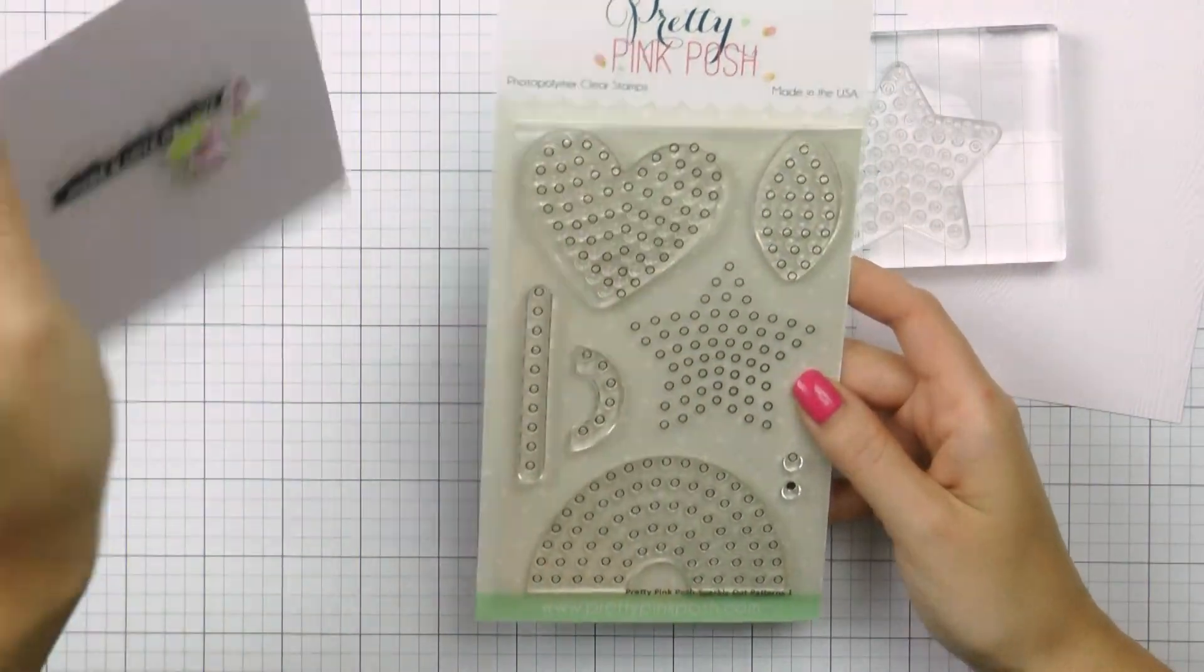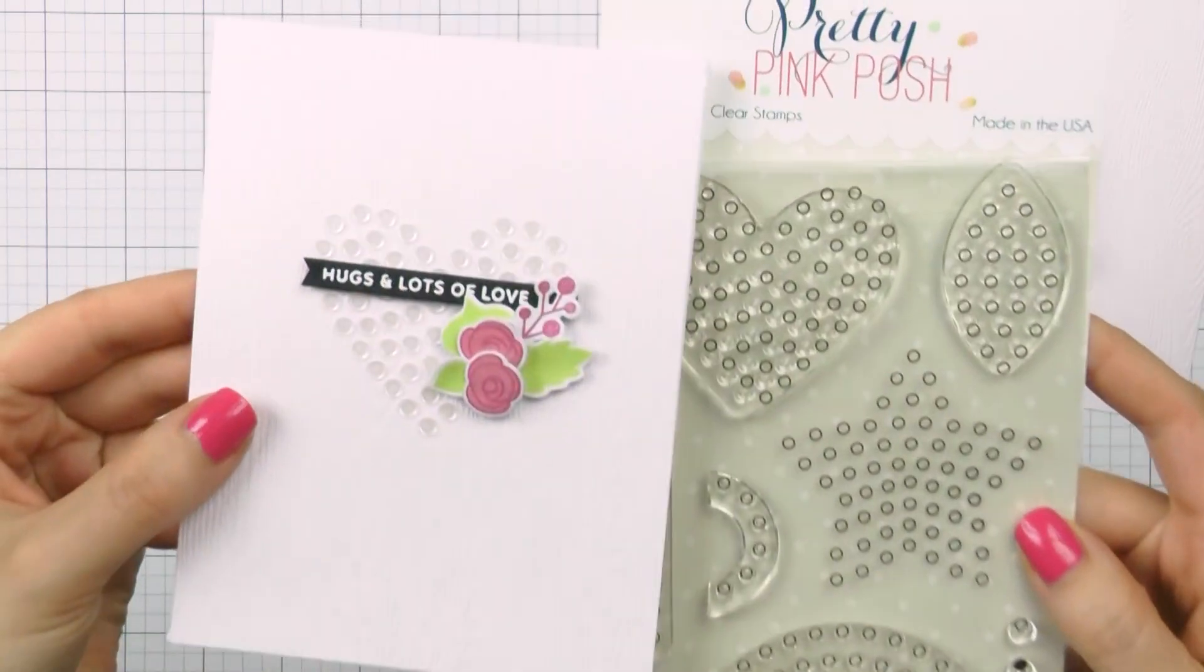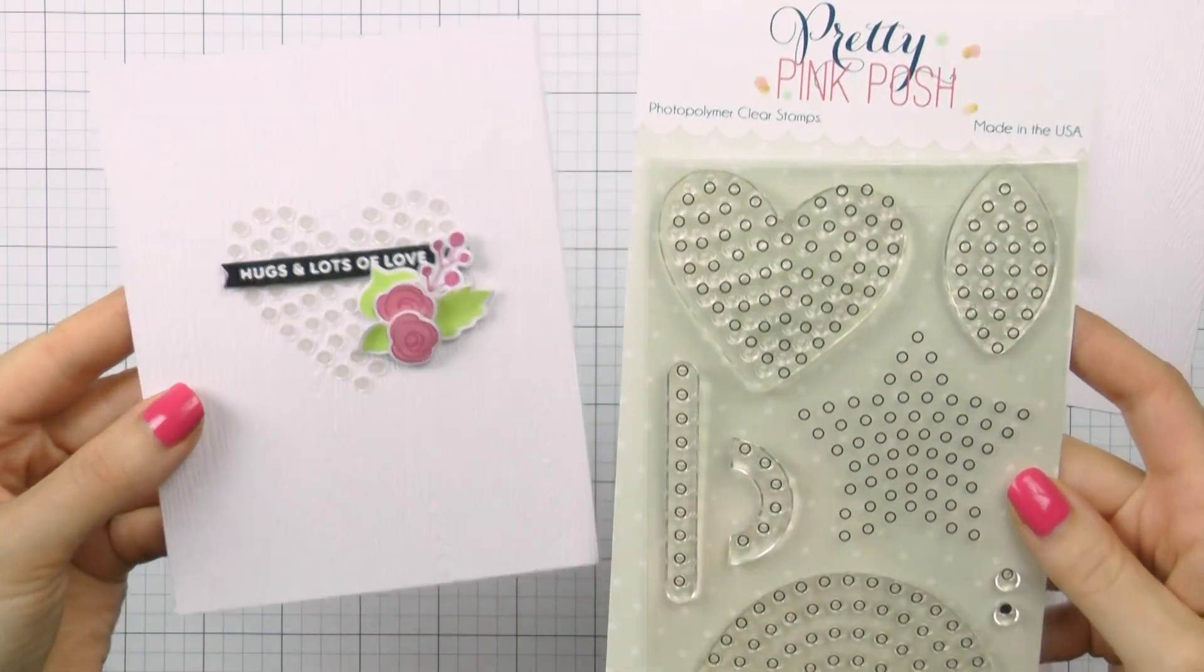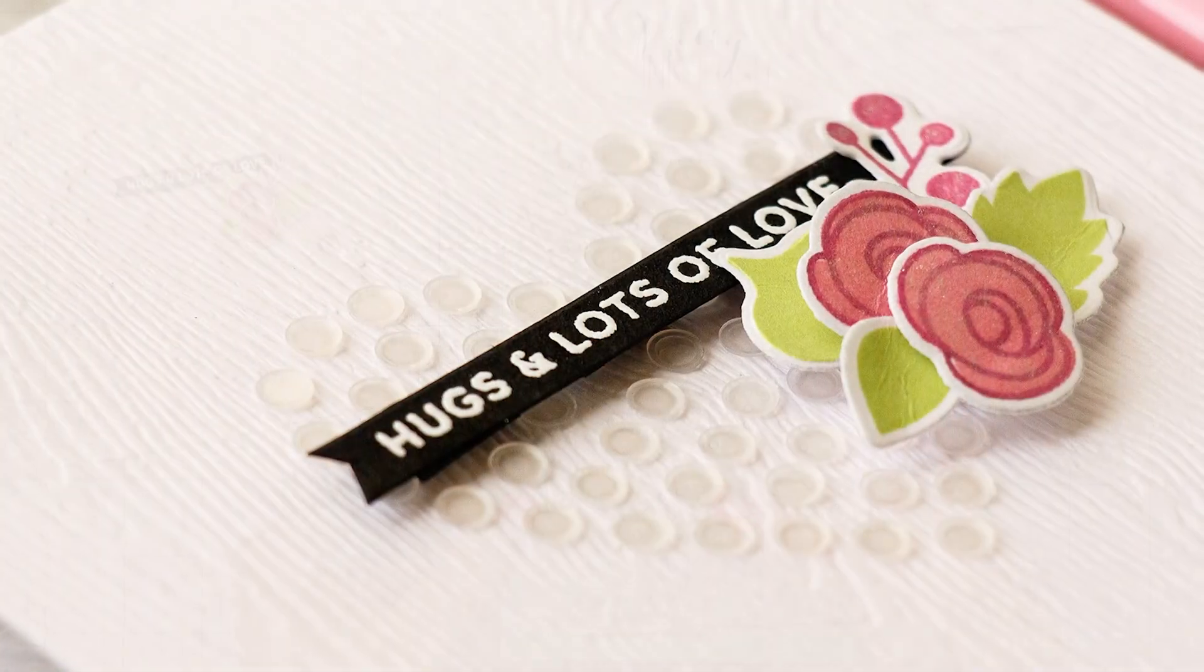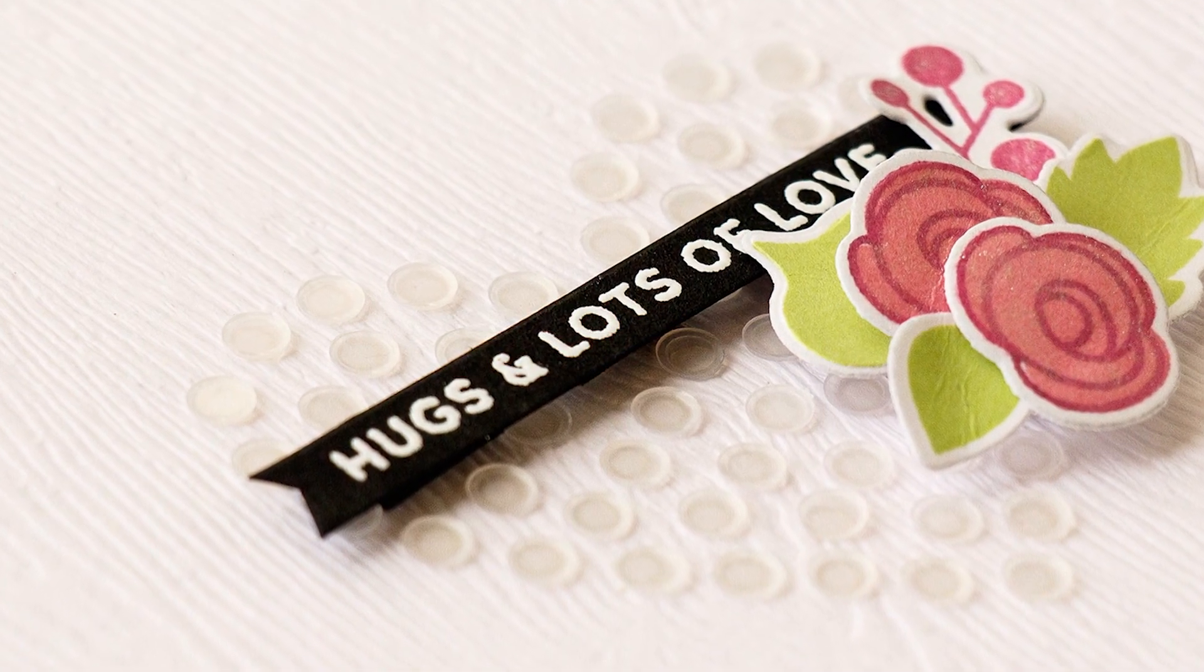This stamp set has been designed with that in mind for precise alignment and placement. There are several shapes here, there is a heart shape and here I have a card where I used that heart stamp to create a heart pattern with the help of marshmallow confetti from Pretty Pink Posh.